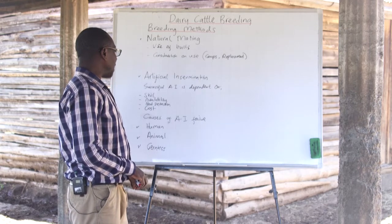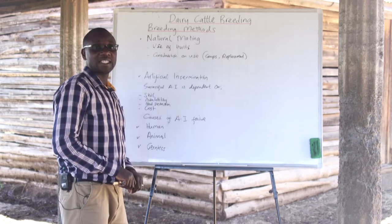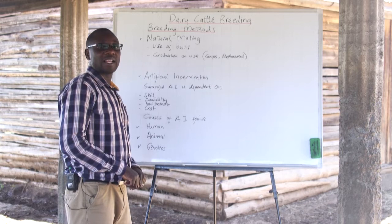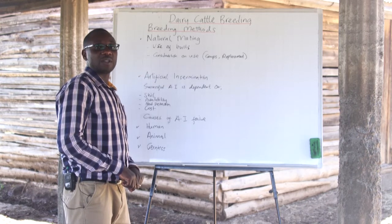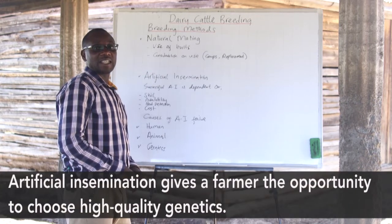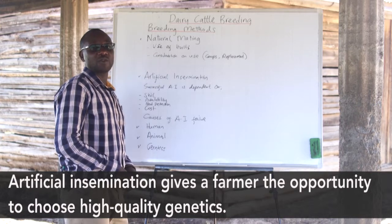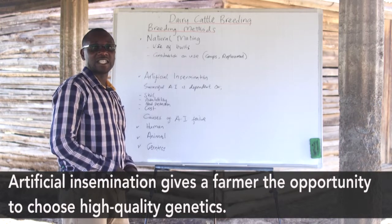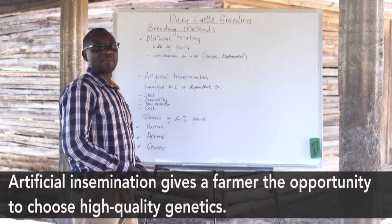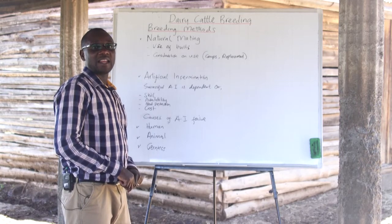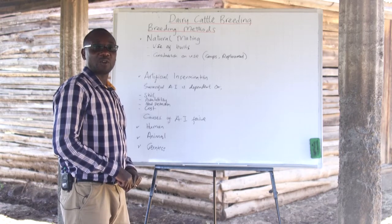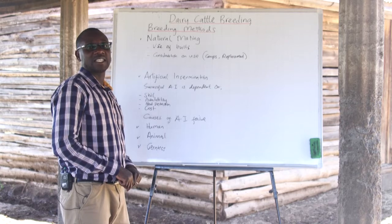There are a number of advantages of using AI, and farmers need to make good selections when looking for bulls to inseminate their cows. One advantage is that artificial insemination provides room for farmers to choose and access good quality genetics, because most of the bulls distributed by genetic companies have been proven and their genetic merit has been determined.